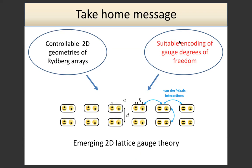This lattice gauge theory arises when we recognize and rearrange the degrees of freedom. The tensor network approach is what we use to understand and benchmark whether this construction is valid — to test if all of this is possible.